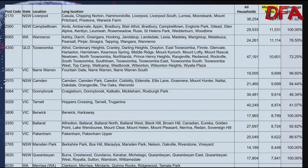Looking at mortgage stress postcodes, we highlighted 2170 and 2560 — Liverpool and Campbelltown in New South Wales — as well as Wanneroo (6065), Toowoomba (4350), Narre Warren (3805), Camden (2570), Donnybrook (3064), Tarneit (3029), Berwick and Harkaway (3806), and Ballarat — all on the list.